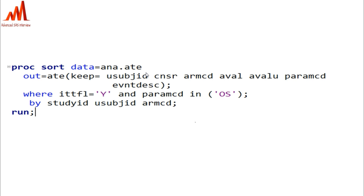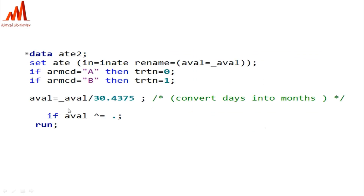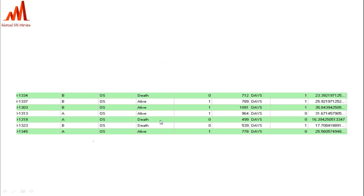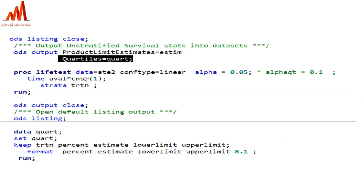Before that, we need to sort our ADTTE dataset or any time-to-event dataset by filtering on PARAMCD and the required population, and create one temporary dataset. If the AVAL values are in days, we need to convert them to months because the table shows values in months, so we divide by 30 to get the AVAL value in months.